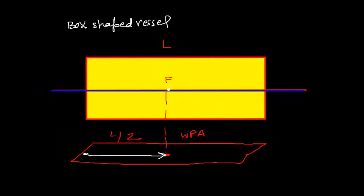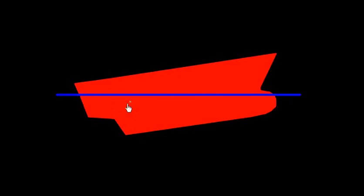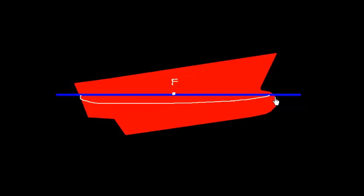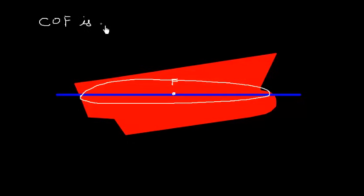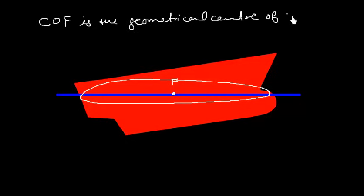Similarly, in the case of a ship, if the vessel trims at center of flotation F, this is nothing but the geometrical center of the waterplane area. So we may write: COF is the geometrical center of the waterplane area.